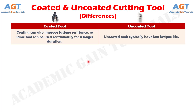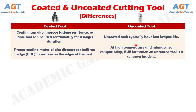Number 12. Coating can also improve fatigue resistance, so the same tool can be used continuously for a longer duration, whereas uncoated tools typically have low fatigue life. And difference number 13. Proper coating material also discourages built-up edge formation on the edges of the tool, whereas at high temperature and mismatched compatibility, built-up edge formation on an uncoated tool is a common incident.